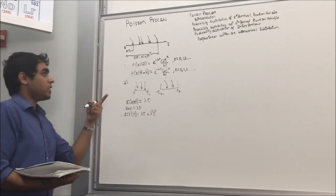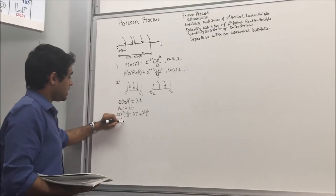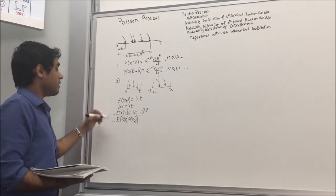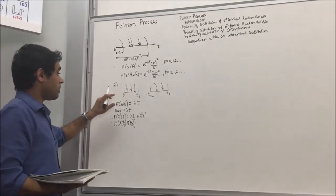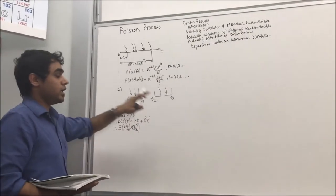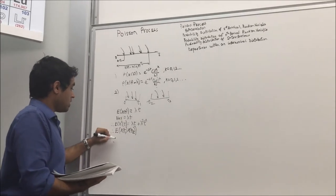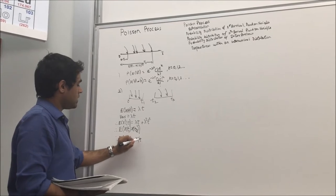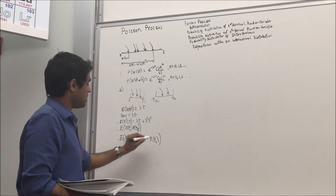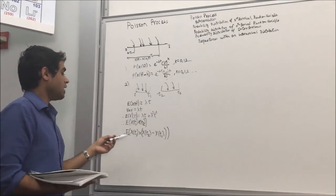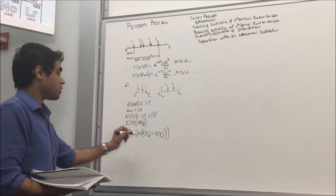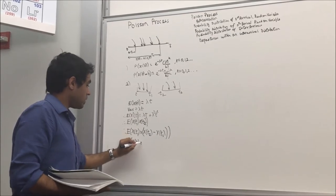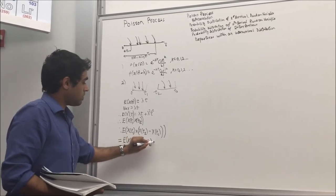To find the autocorrelation function, we need to find E[X(t1) · X(t2)]. We take two non-overlapping processes: from interval 0 to t1, and from interval t1 to t2. The expectation becomes E[X(t1) · (X(t2) − X(t1))]. Since the arrivals at t1 belong to only one of the two processes, they are non-overlapping and independent, so we can write this as E[X(t1)] · E[X(t2) − X(t1)].